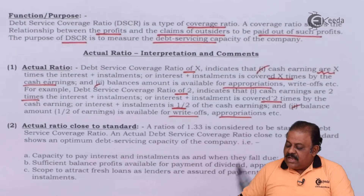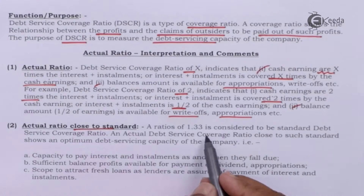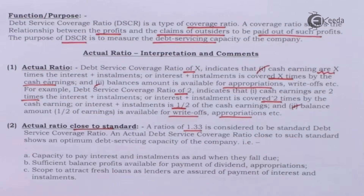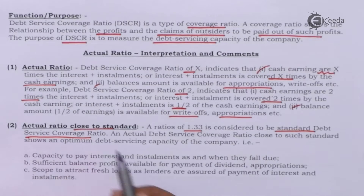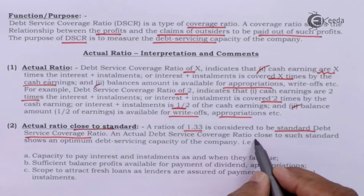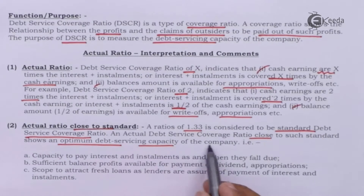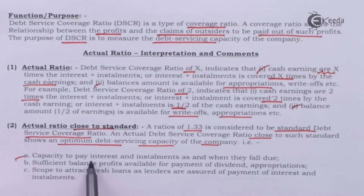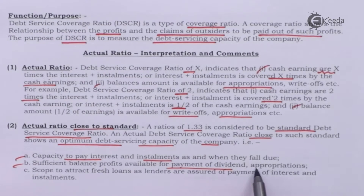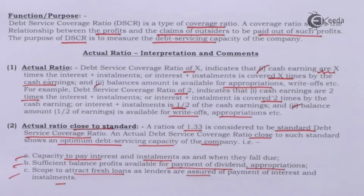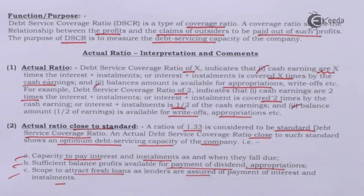A ratio of 1.33 is considered to be the standard debt service coverage ratio. An actual ratio close to this standard shows optimum debt servicing capacity — that is, capacity to pay interest and installment as and when they fall due, sufficient balance profit for dividend and appropriation, and scope to attract fresh loans as lenders are assured of payment of interest and installments.